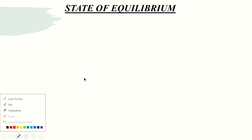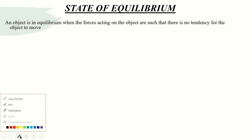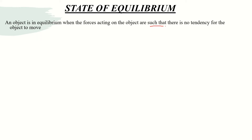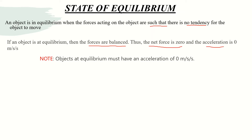Hello, in this video I shall talk about states of equilibrium. Objects are in equilibrium when the forces acting on that object are such that there is no tendency for the object to move. For objects to be at equilibrium, the forces acting on that object must be balanced. This means that the net force is zero and the acceleration is zero. Objects at equilibrium must have an acceleration of zero meters per second squared.